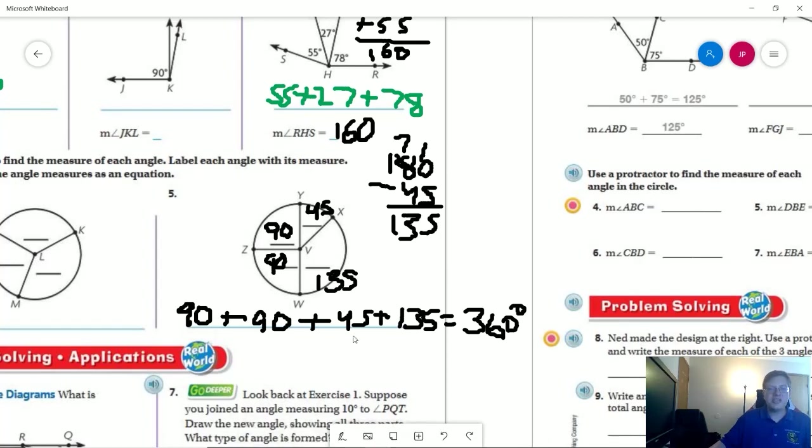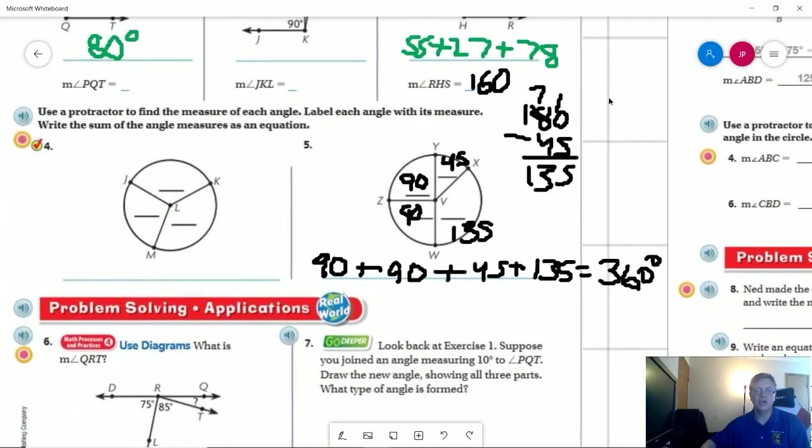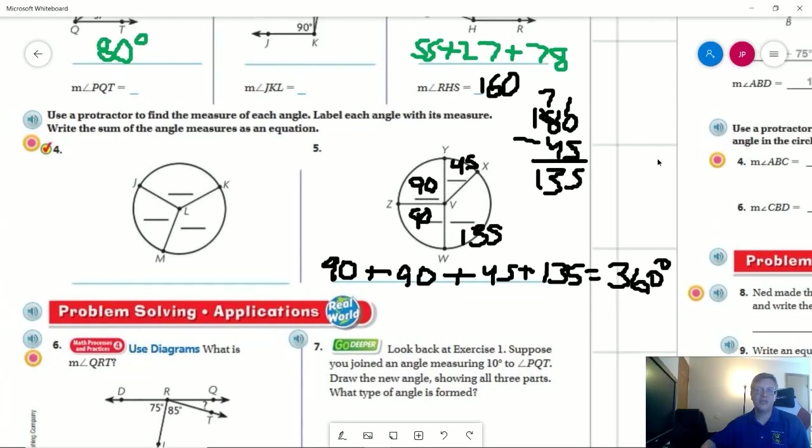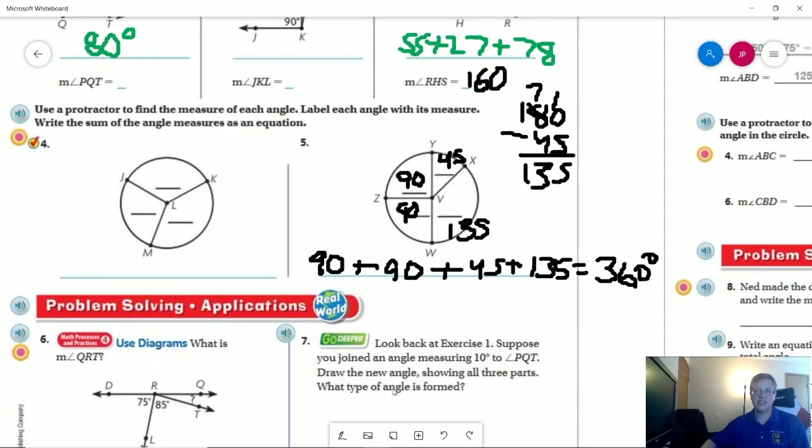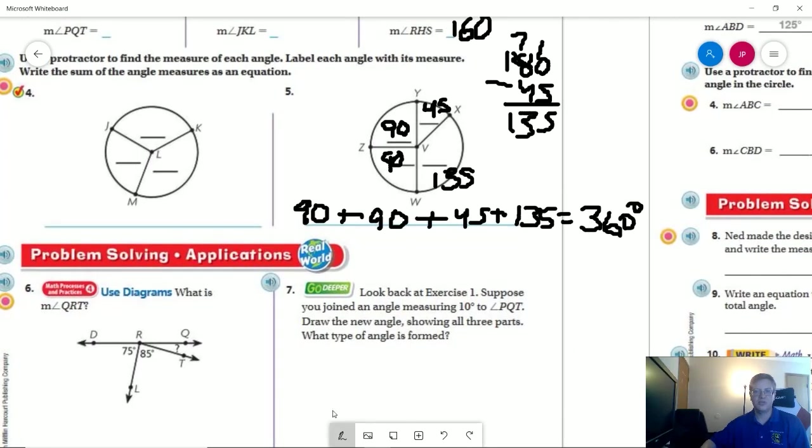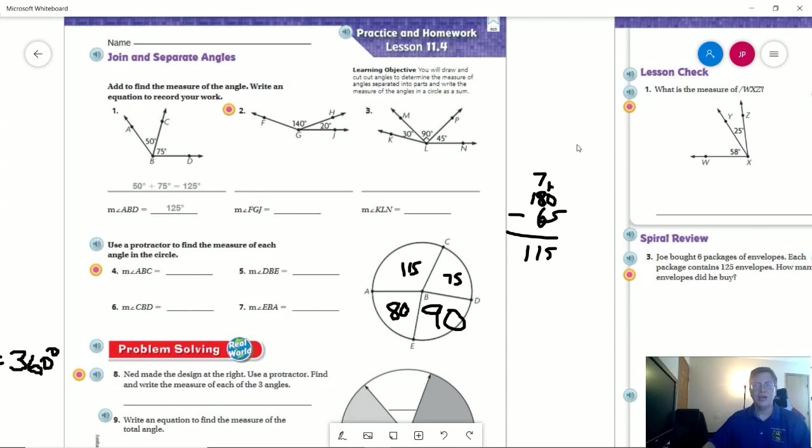So this probably takes longer for me to explain than it would actually take to do. Really quick, I didn't assign this one, but if we went back to this one, just to show you, if we take and add 10 more degrees here, we can do 80 plus 10. And that would give us a 90 degree angle, which would be a right angle. So 90 degrees equals a right angle.